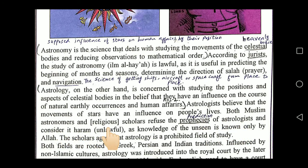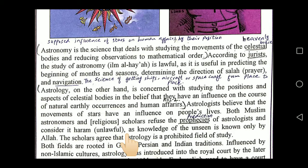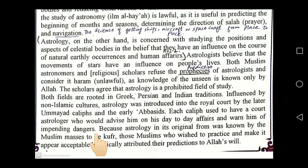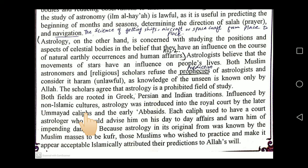Astrologists believe that the movement of stars influences people's lives. Both astronomers and religious scholars refuse the prophecies of astrologists and consider it haram. Getting such knowledge is unlawful and we are forbidden from it, because the knowledge of the unseen is known only by Allah. Such knowledge relates to the future — what will happen to a person or on the earth — and it is not the practice of Muslims.